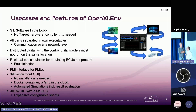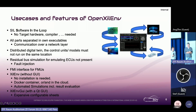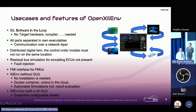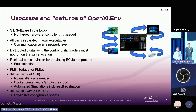So what are the use cases for the OpenXIL environment? There is still software-in-the-loop. The important thing is: no target hardware is required, and no target compiler is required. You can just use whatever compiler you are using on your developer machine, create your executables, and start a simulation. All parts are separated — our own executables — meaning you can combine multiple models and multiple executables into one big setup and do an overall simulation.